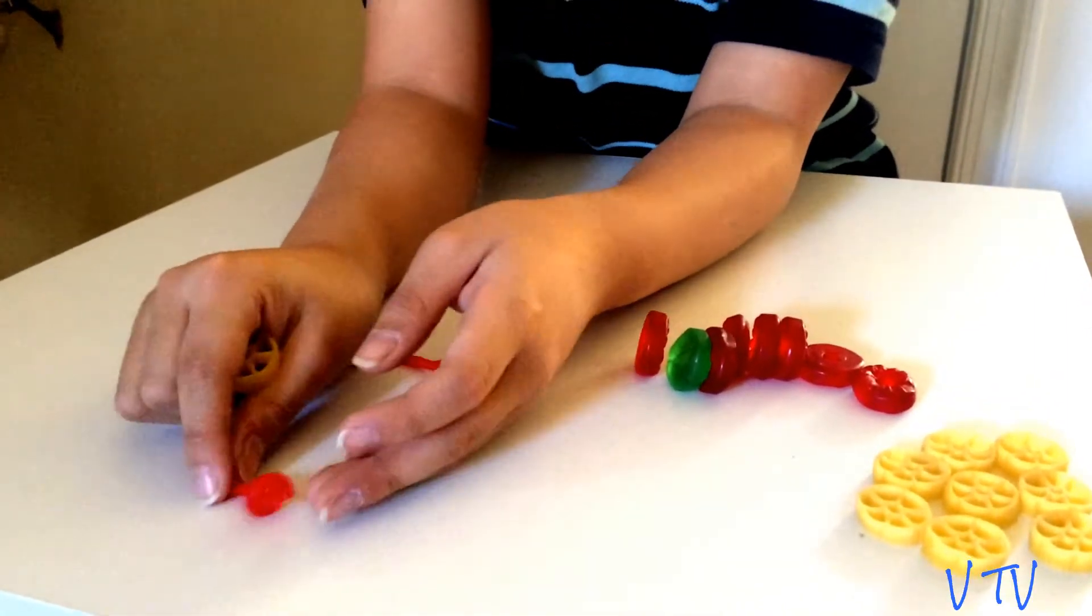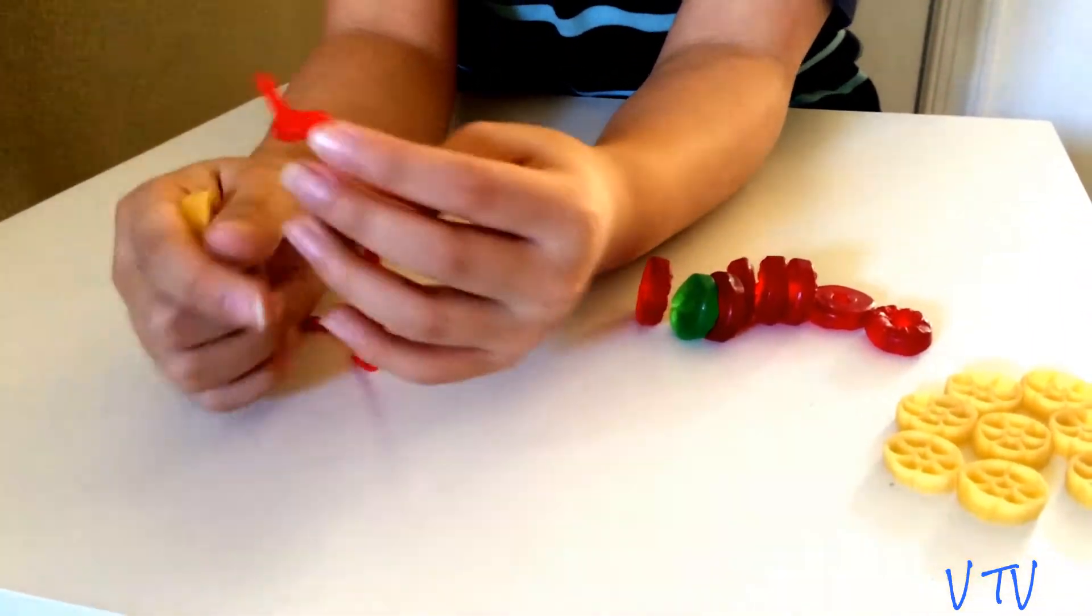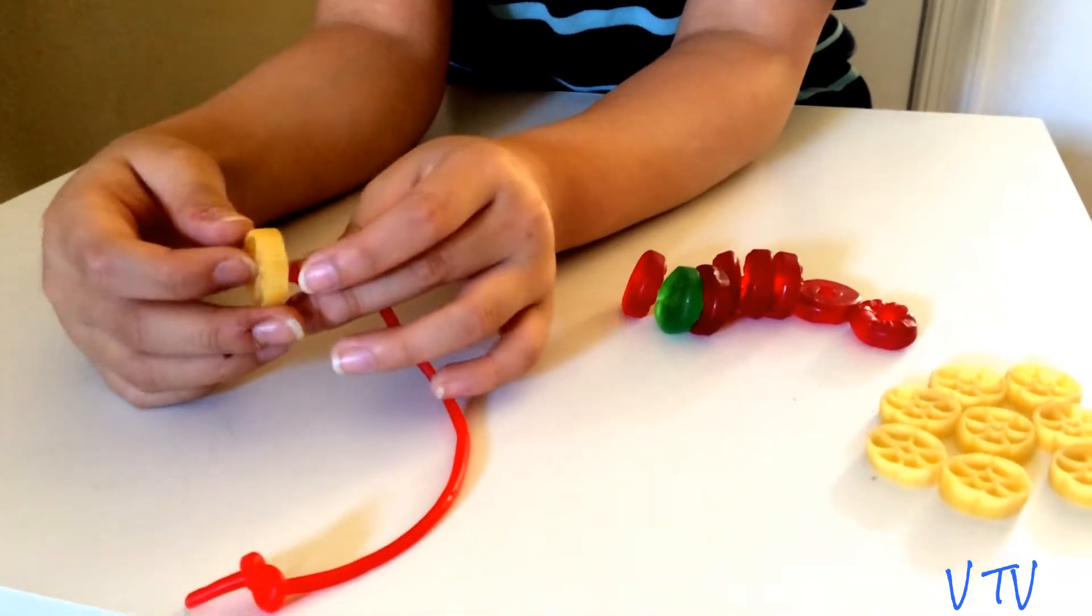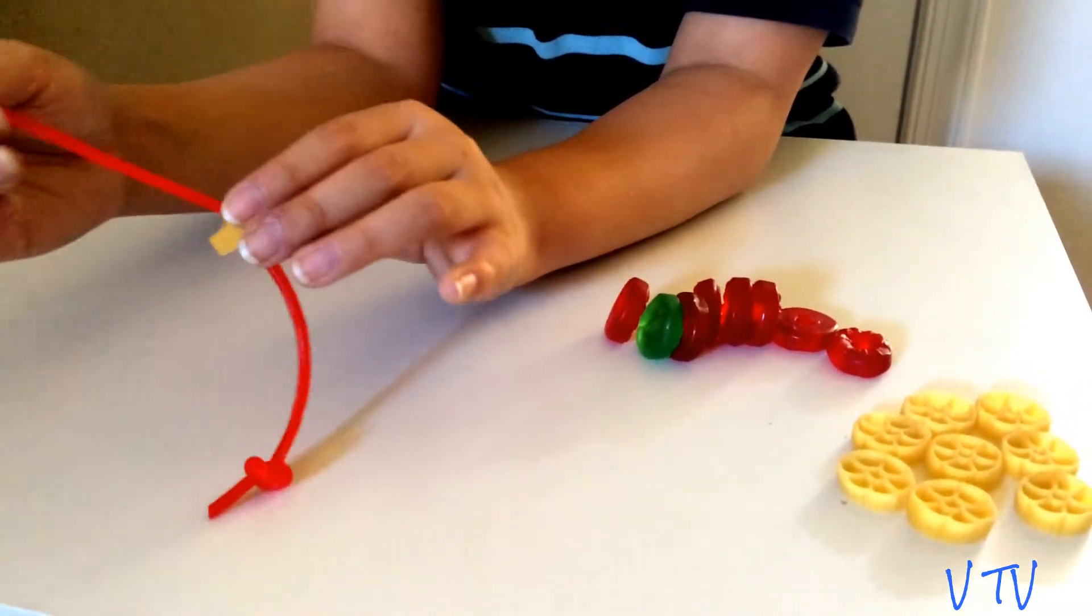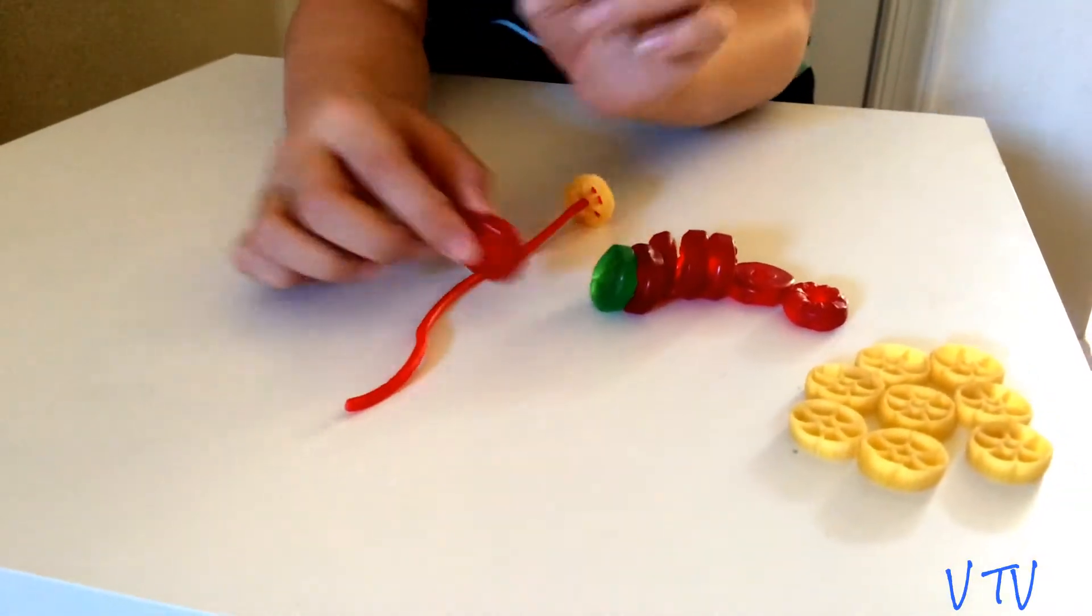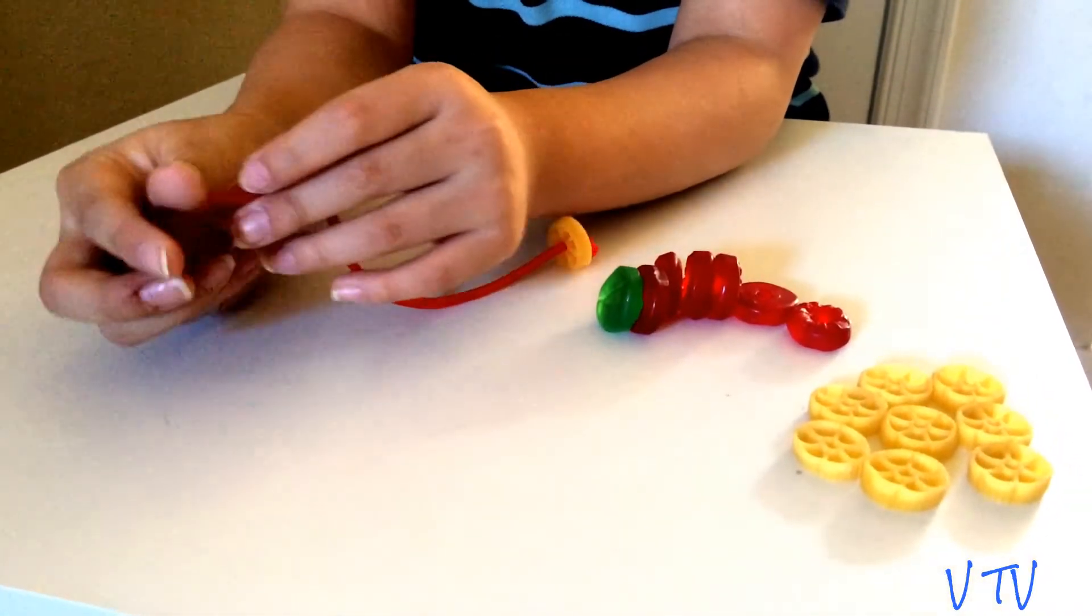First, put a knot right here, which I have already done, and then put the pasta through. Keep repeating this until you run out.